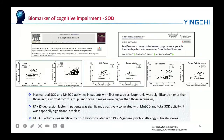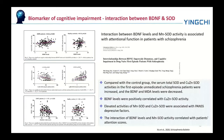Plasma total SOD and MnSOD activities in patients with first-episode schizophrenia were significantly higher than those in the normal control group, and those in males were higher than those in females. PANSS depression factor in patients was significantly positively correlated with MnSOD and total SOD activity, especially in males. Compared with the control group, serum total SOD and SOD activities in first-episode unmedicated schizophrenia patients were increased, while BDNF and MDA levels were decreased. The interaction between BDNF levels and MnSOD activity is associated with attentional function in patients with schizophrenia.